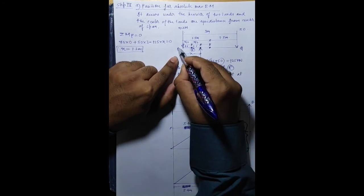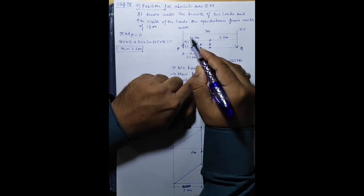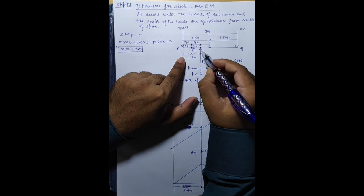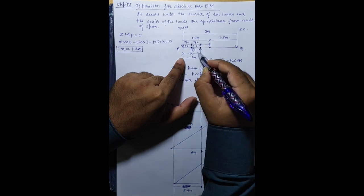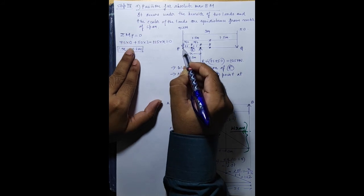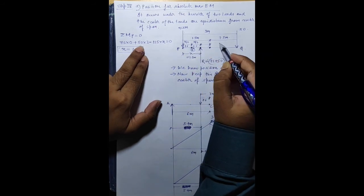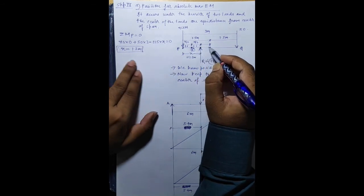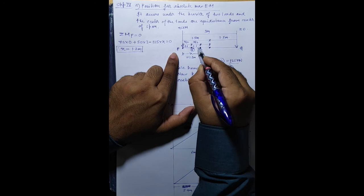Let P be the position of the 75 kN load and Q be the position of the 50 kN load. The resultant of the two loads is 75 + 50 = 125 kN. To find the distance x of the resultant from P, take moments at P: (50 × 3) − (125 × x) = 0, giving x = 150/125 = 1.2 m. So the center of load is 1.2 m from the 75 kN load.